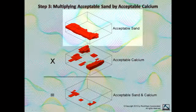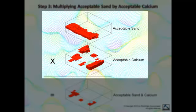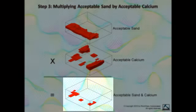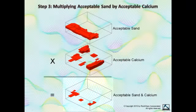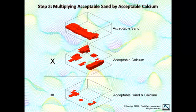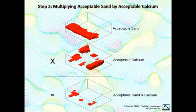Finally, we multiply the acceptable sand and acceptable calcium models on a voxel-by-voxel basis to create a model that depicts areas where both the sand and the calcium are acceptable. We're simply multiplying zeros and ones. This process is called a Boolean AND operation. A value will be true, or equal to 1.0, where both the sand AND the calcium are acceptable. A value will be false, or equal to zero, where either the sand OR the calcium are unacceptable.